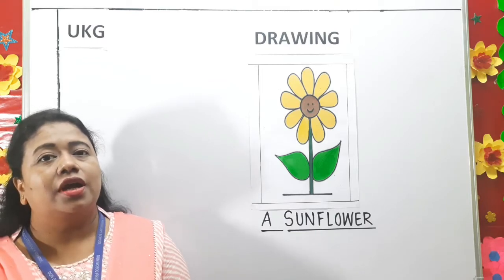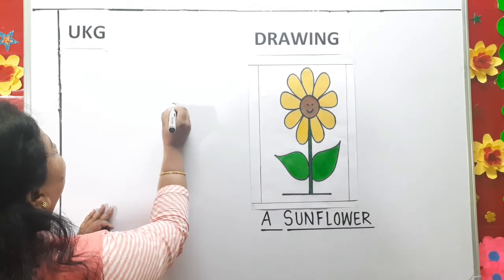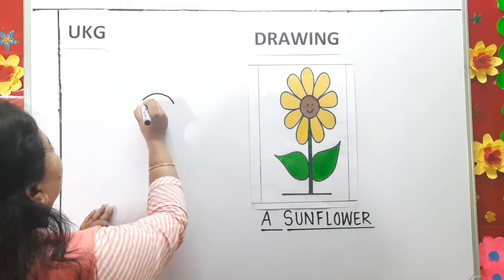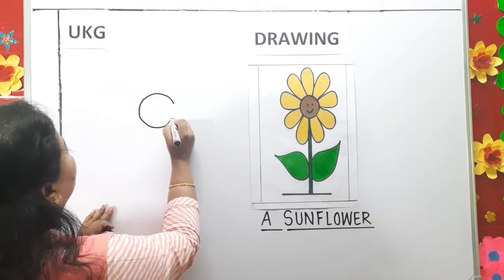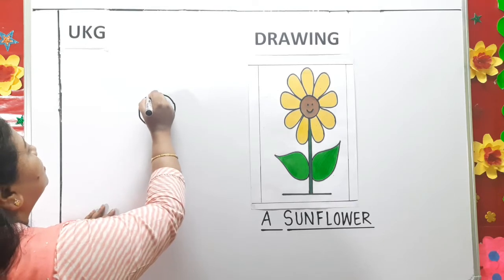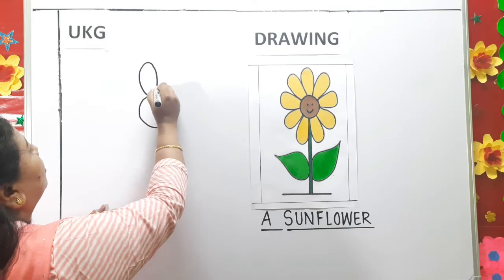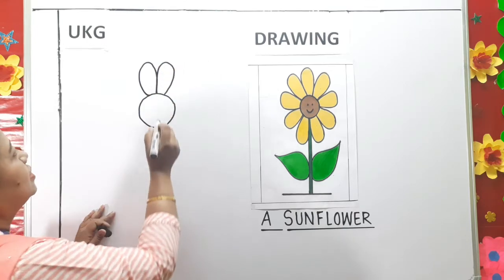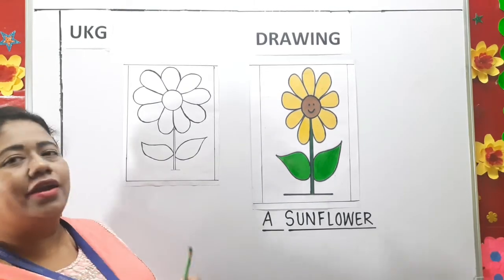To draw the sunflower, first I will make the circle. See children, like this, you have to make a circle. Then you have to make petals, like this. You have to make petals. See children, my sunflower is ready.